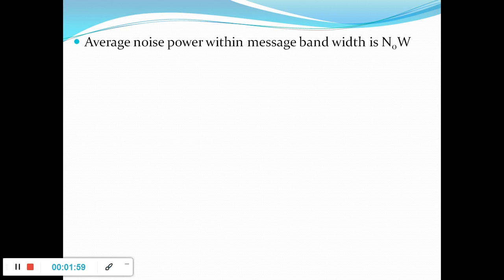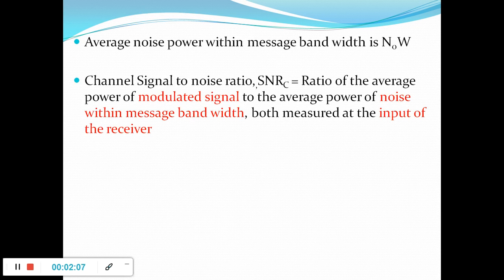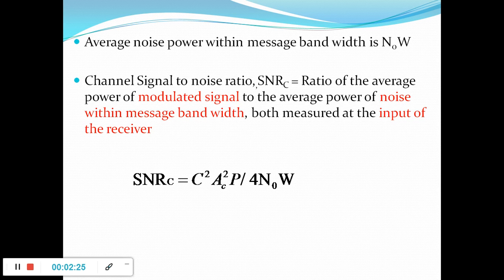The average noise power within message bandwidth is N0 into W, which we have seen in the previous presentation. The channel signal-to-noise ratio is defined as the ratio of average power of the modulated signal to the average power of the noise within message bandwidth, both measured at the input of the receiver. Taking the ratio, we get SNR at the channel as C²·Ac²·P divided by 4·N0·W.